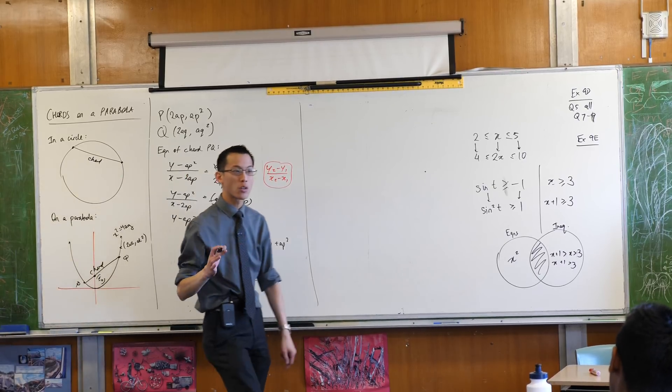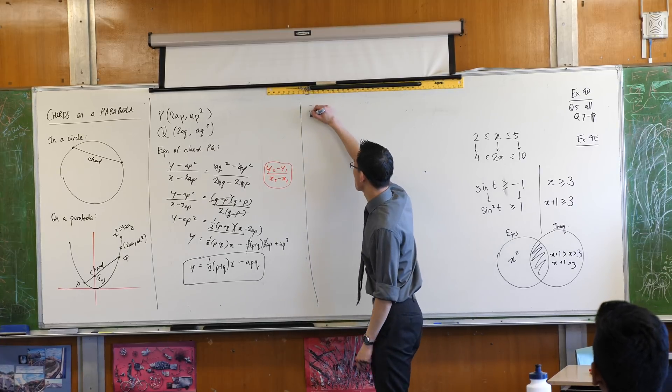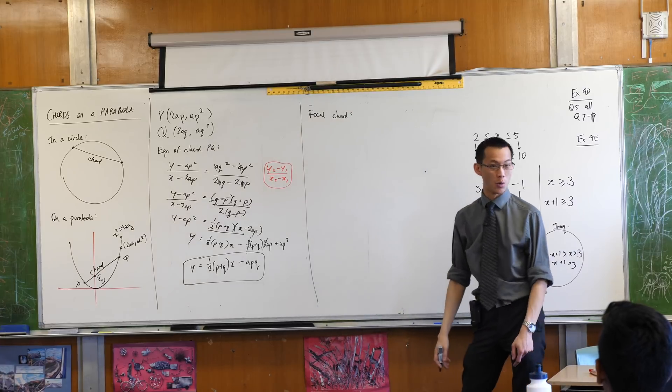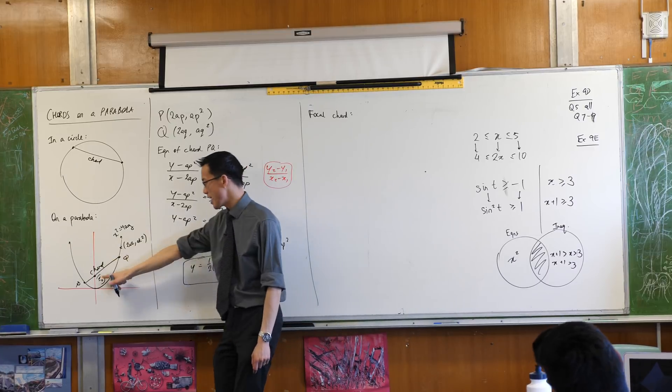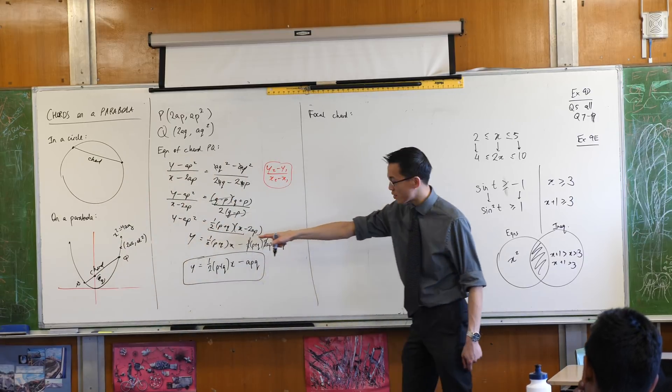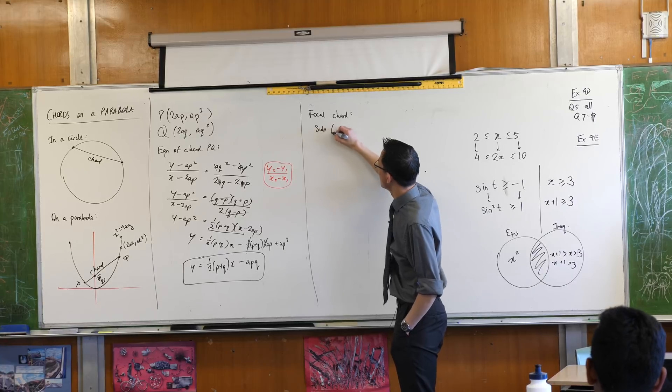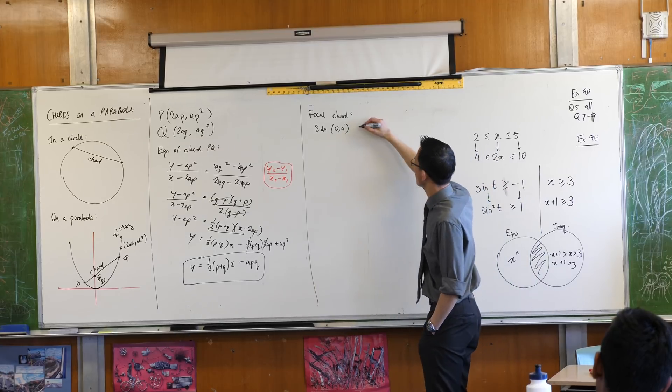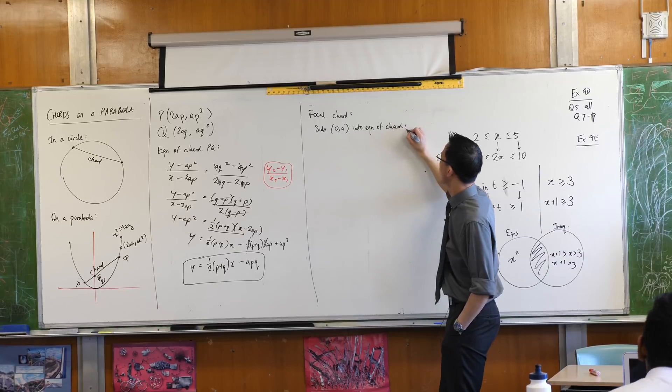Now, watch what happens. Some chords go through the focus, some of them. Originally, these chords are called focal chords. A focal chord is a chord that goes through the focus. If that thing goes through there, then these coordinates ought to satisfy this equation. Do you agree? So therefore, let's sub that into the equation of chord, and just see what happens. Into equation of chord.